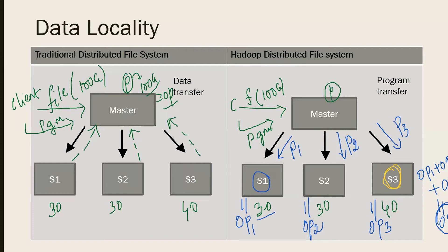The biggest difference is that data is NOT sent back to the master. Instead, we use parallelism — each machine's processing power is used separately for parallel processing. The outputs are generated locally and one machine consolidates them. Only the program is transferred to the slaves; the data stays local on the slave machines. This is called data locality: keep the data locally on your slave machines, and also process them locally there.